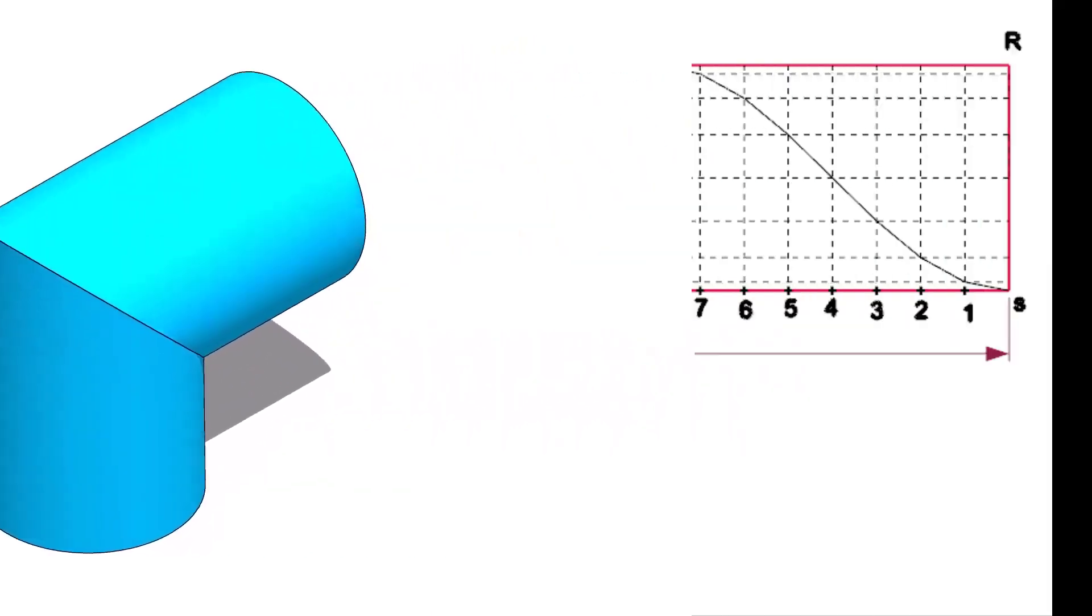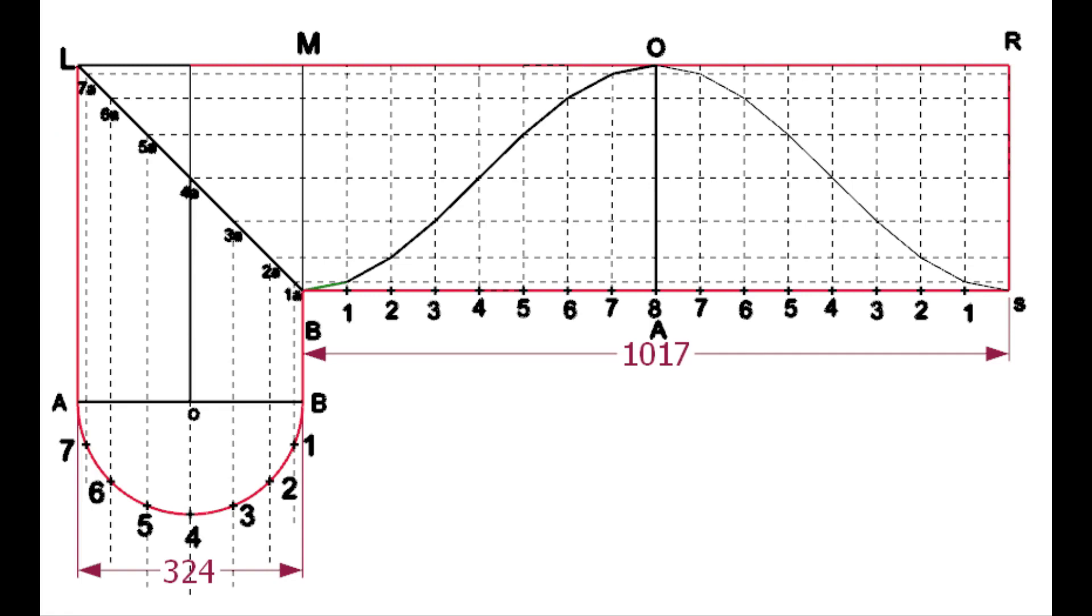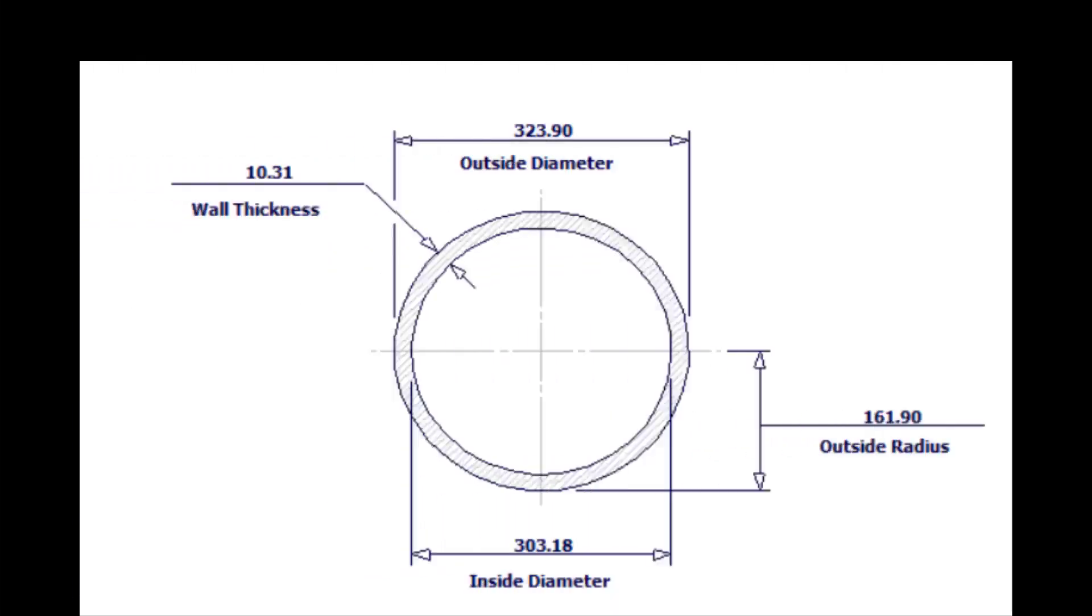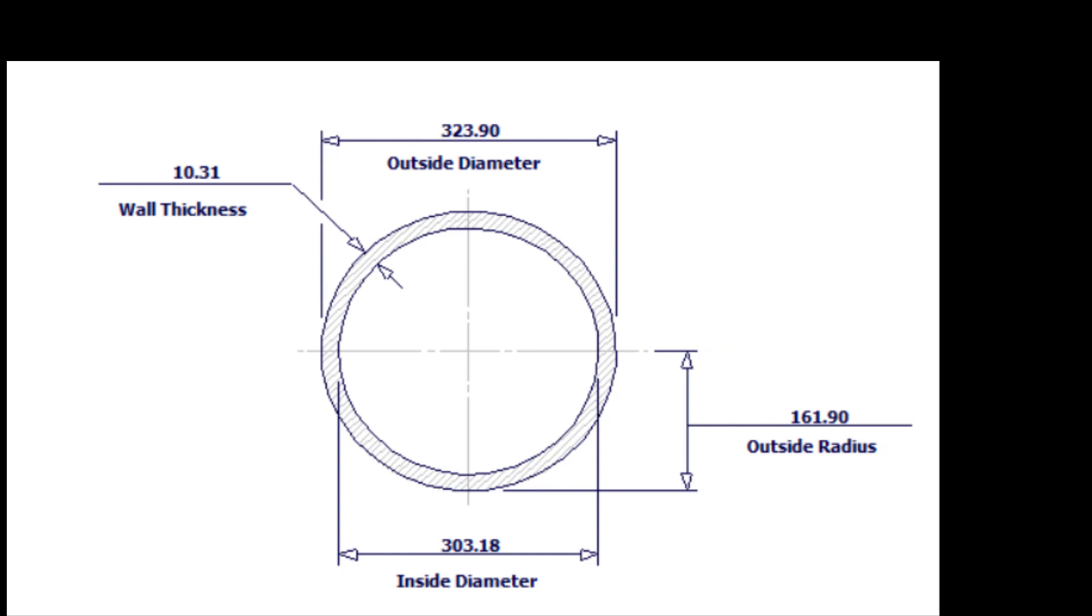In this tutorial, we will lay out a 12-inch single-cut miter. Outside diameter of a 12-inch pipe is 324 millimeters. Let us calculate the circumference. Multiply 324 into 3.14. The answer is 1017 millimeters.